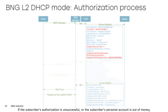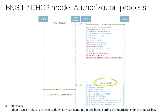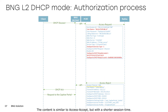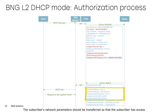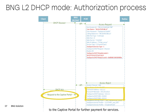If the subscriber's authorization is unsuccessful, or the subscriber's personal account is out of money, then an access reject is transmitted, which must contain the attributes setting the restrictions for the subscriber. The content is similar to access accept but with a shorter session time. If the service list and policing are missing, the default parameters described in the PCRF configuration are applied. The subscriber's network parameters should be transferred so that the subscriber has access to the captive portal for further payment for services.